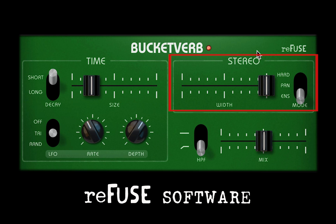In Ensemble mode, BucketVerb uses a pair of modeled BBD reverb chips instead of a single one. The delay times of the chips are modulated in a style similar to a classic rack unit chorus. This gives the reverb a subjectively thicker and softer sound than the other two modes. Note that the modulation of the two virtual chips in Ensemble mode is independently preset, and is not affected by BucketVerb's main LFO controls.